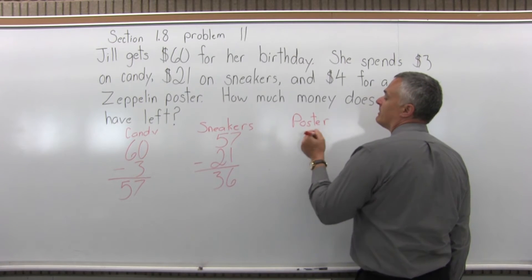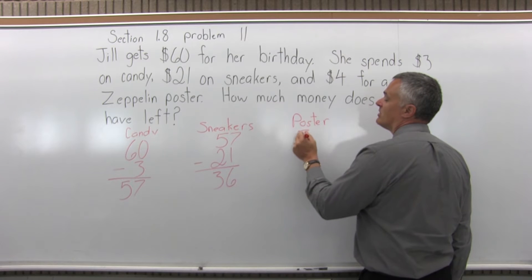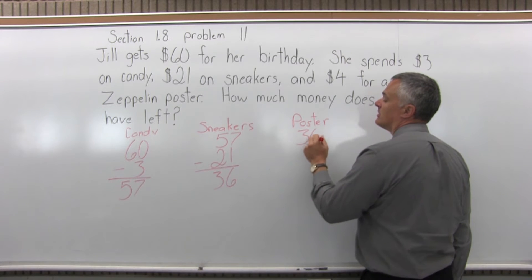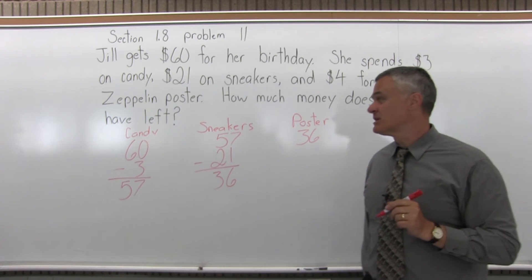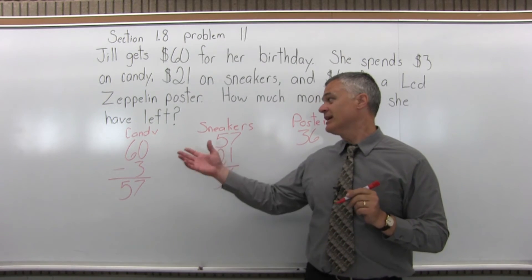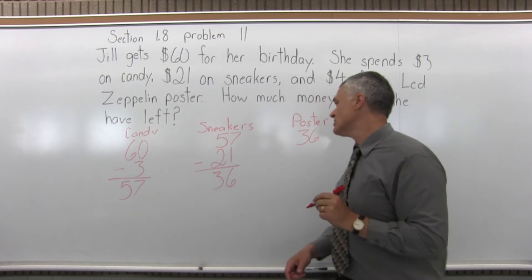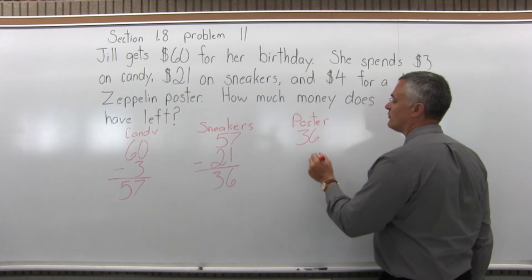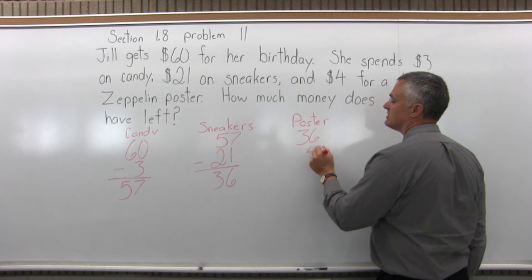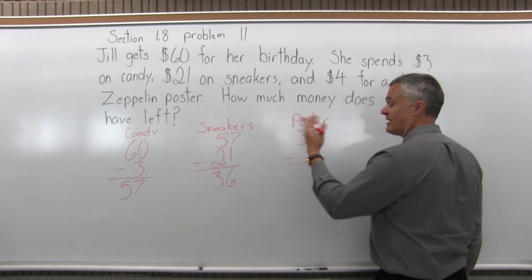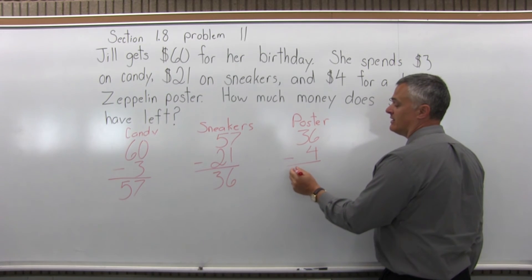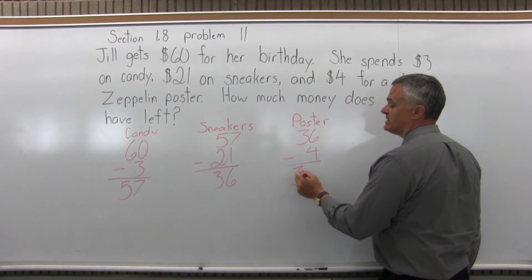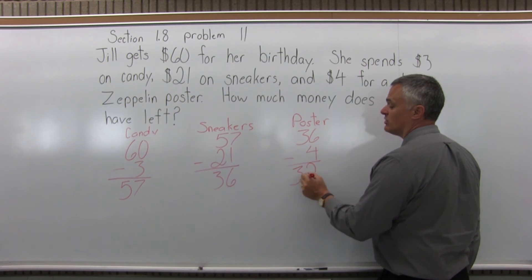By the time we get to buying the poster, we have $36, because Jill already bought candy and then sneakers. The poster was $4, so we're going to subtract that — it's coming away from the available money. $36 minus $4 is $32.